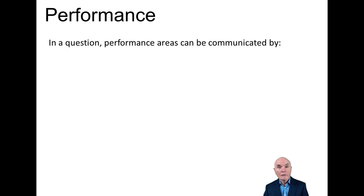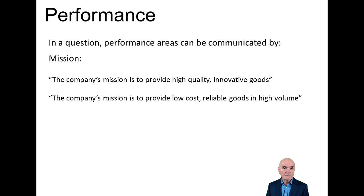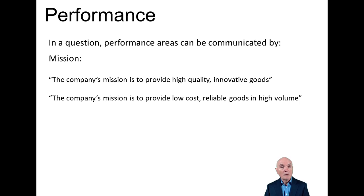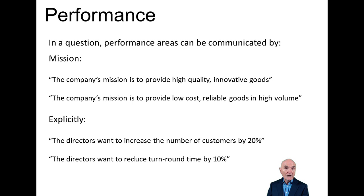In a question, the desired performance areas can be communicated in two ways. First, it may be tucked away in a mission statement, or maybe it's called the aims of the organisation. So the company's mission is to provide high quality innovative goods - that gives some clue as to what's important. Or the company's mission is to provide low cost, reliable goods at high volume. Some questions give performance more explicitly - for example, the directors want to increase the number of customers by 20%, or reduce turnaround times by 10%. This says what performance is, and therefore we have to direct our management effort there.